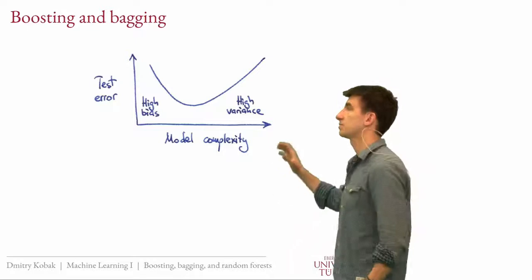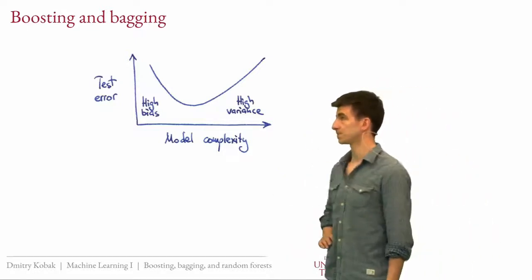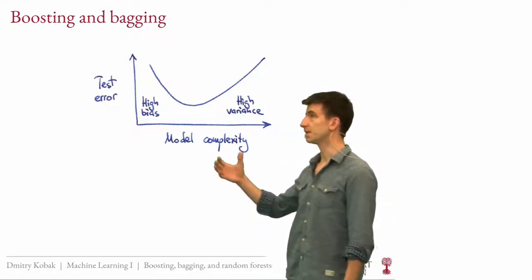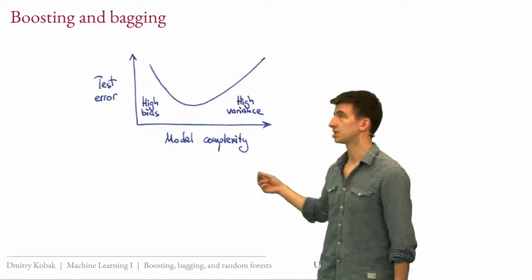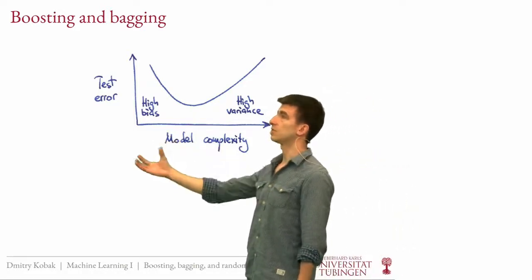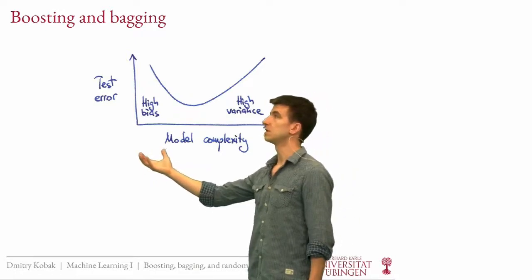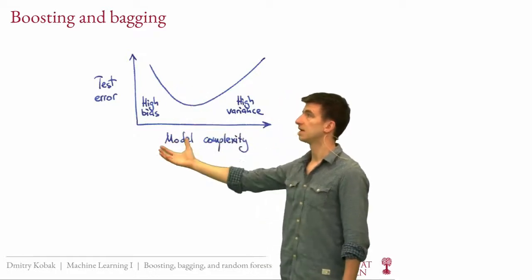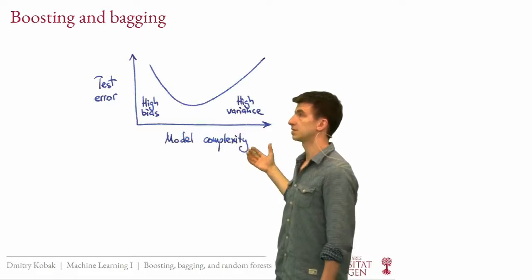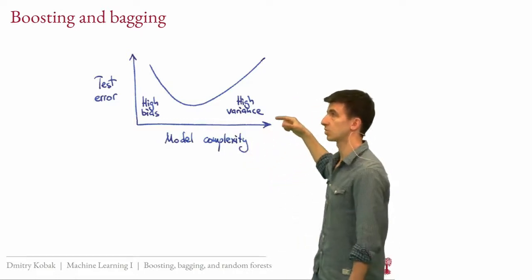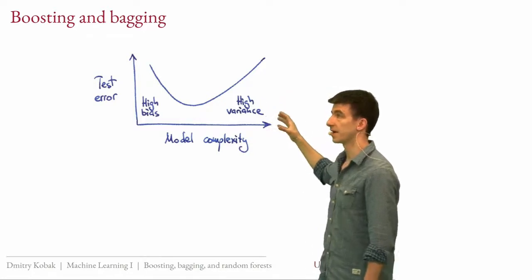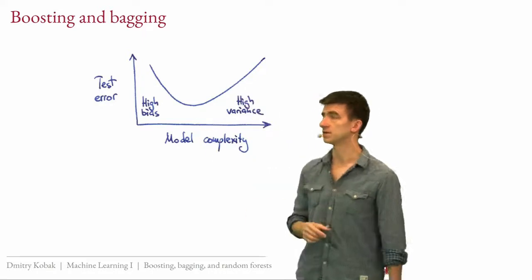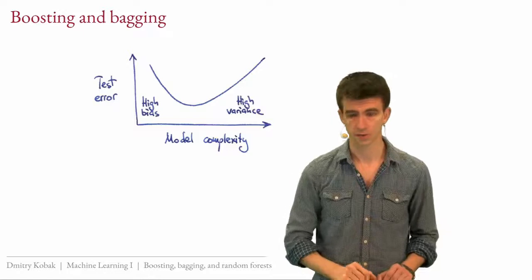To introduce these things I will start with the bias-variance trade-off image used a lot in this course. Depending on the model complexity, when you go from very simple models, they underfit the data and show high bias — the test error is high. If you increase the complexity, you reach a regime where the model overfits the training data: bias is low but variance is high and test error is high again. Somewhere in between is the ideal sweet spot.